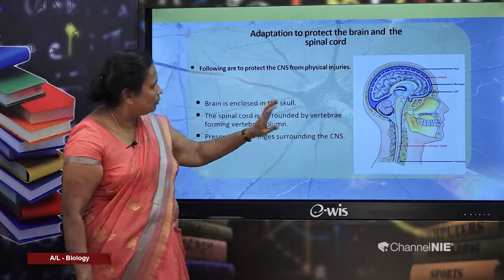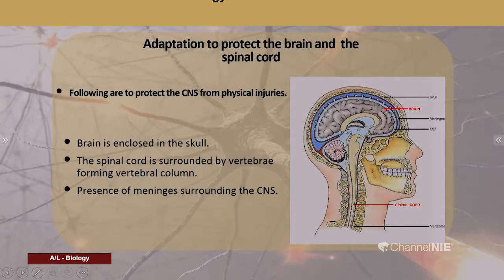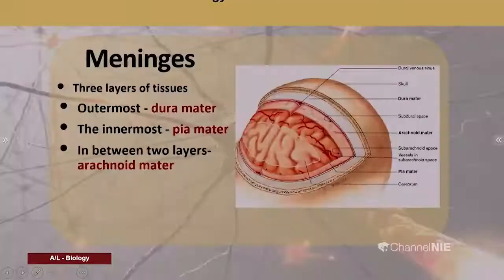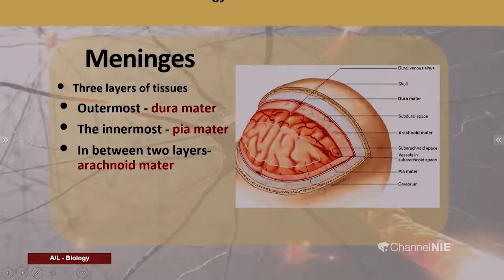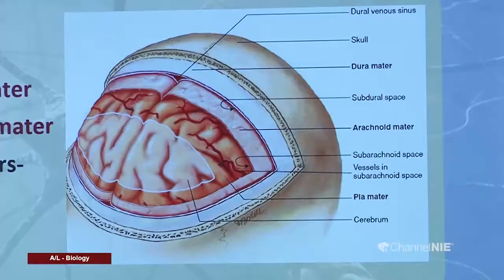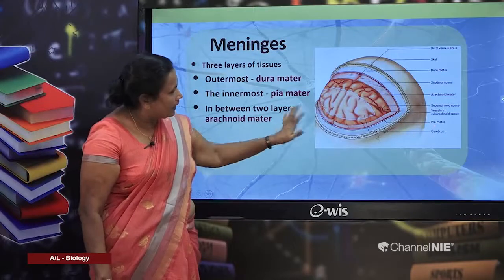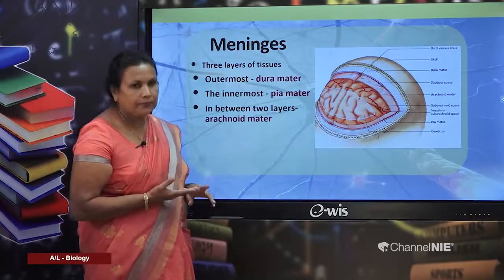The second adaptation to protect the brain and spinal cord is the presence of meninges. Between the brain and the skull there are membranes called meninges, which extend throughout the spinal cord as well. There are three layers of tissue in the meninges: the outermost is the dura mater, the innermost is the pia mater, and in between is the arachnoid mater.